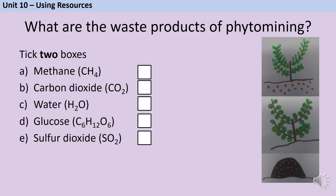You could also be asked about the main waste products from phytomining. Remember, in your AQA GCSE science exams they'll always put in bold the number of boxes you're meant to tick. As you burn a plant, you're burning lots of carbohydrates, and therefore you're going to release carbon dioxide but also water.